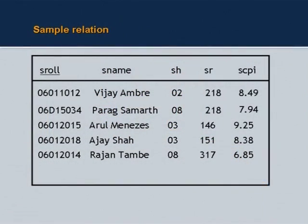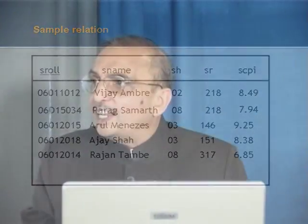Here is a sample relation: S-role, S-name, SH, SR, S-CPI, shown as a table. A table is intuitively what we consider to be a file. There is one important difference between a relation and a file. If a new student joins and you insert that student in a COBOL file, the original file remains. But mathematically, when you insert a new student into a relation, you get a new relation — the original had so many rows, the new one has that many plus one. Mathematically, these two relations are not the same. It is very important to appreciate that mathematically, a relation where even a small change occurs is not the same as the original relation.